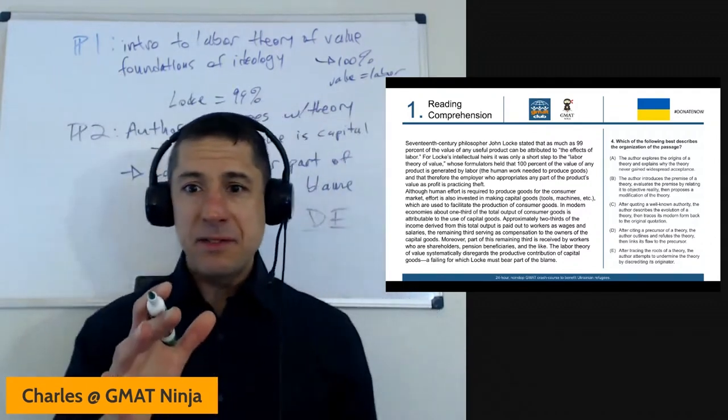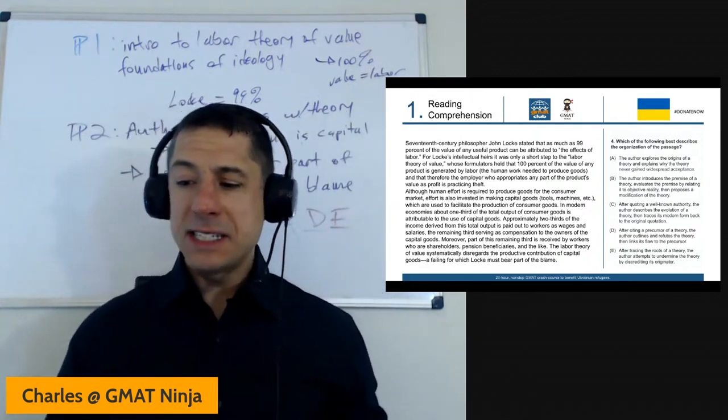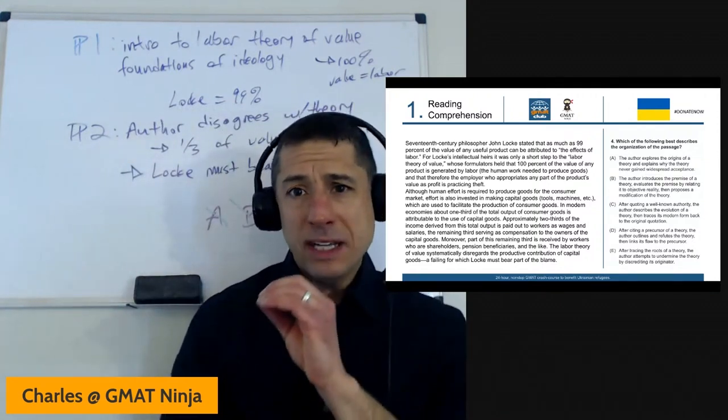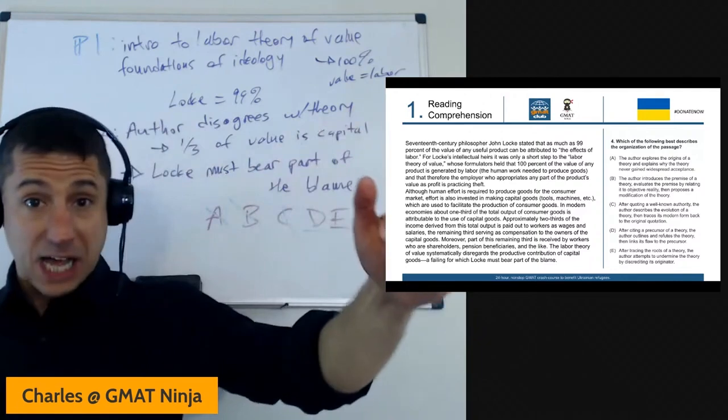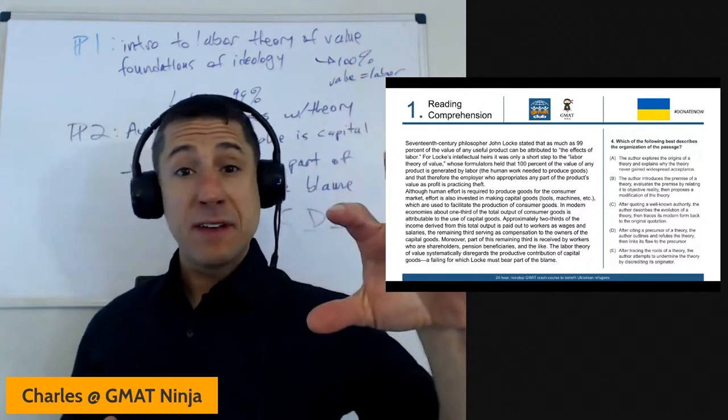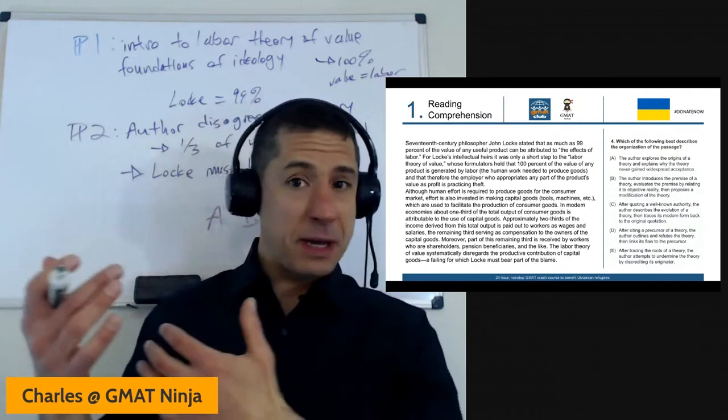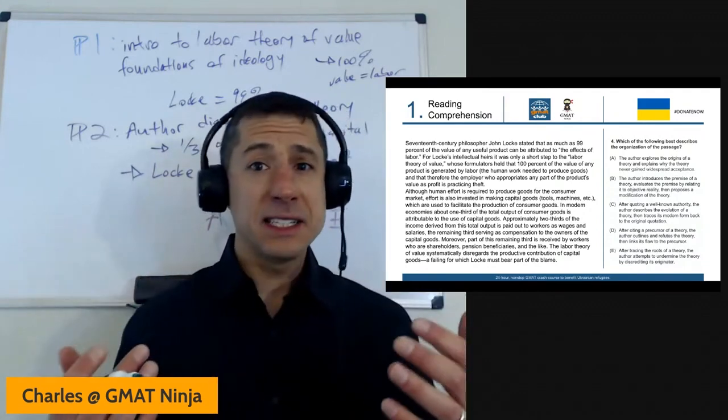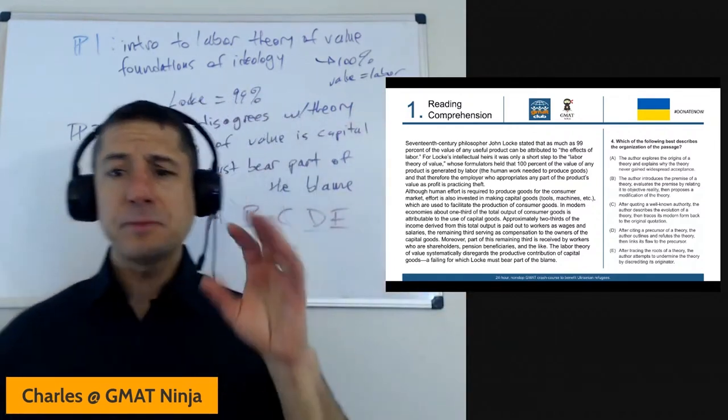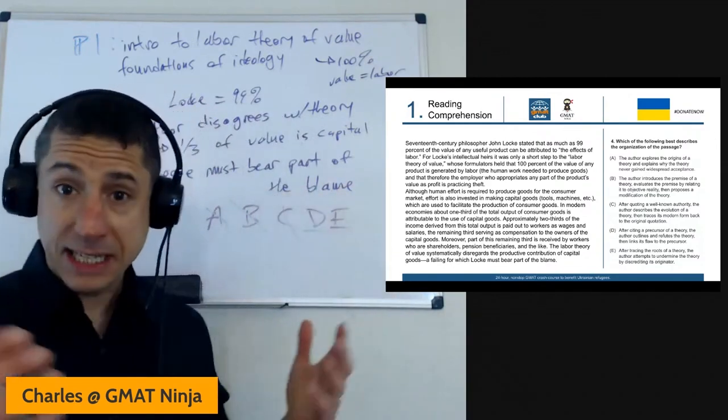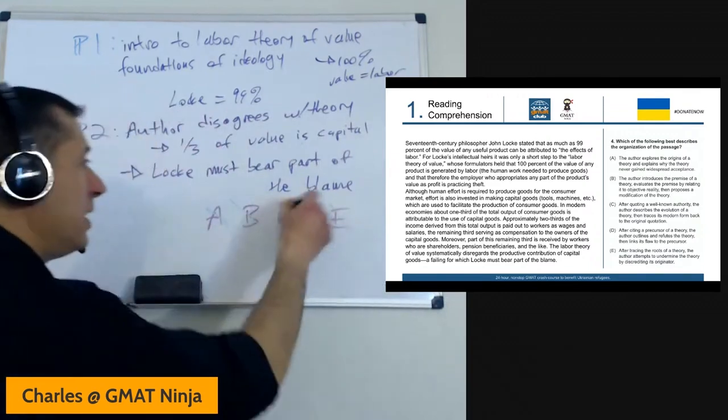I'm getting a little bit of objection to E or people who picked E. After tracing the roots of a theory, the author attempts to undermine the theory by discrediting the originator. Let's think about how exactly the author is discrediting the theory or is undermining the theory. It's not by discrediting the originator. Yes, the author's critical of Locke and says that this theory is wrong, but it's just a whole bunch of evidence there saying, here's how it works in a modern economy. Two-thirds goes to labor, one-third goes to capital. That's the way the author's going about undermining the theory, not by discrediting Locke and saying, well, Locke didn't know anything. Not what the author's saying at all. Well, authors are refuting it by saying, no, here's the nuts and bolts of why empirically, why this is wrong. It's not really an attack or a discrediting at all of the originator. So E is out. D is our winner.